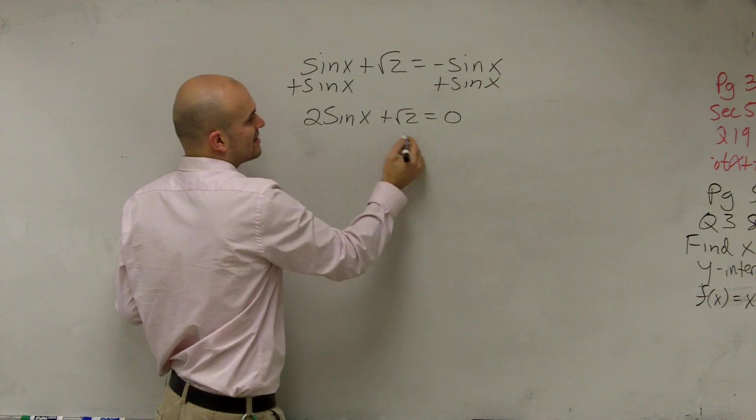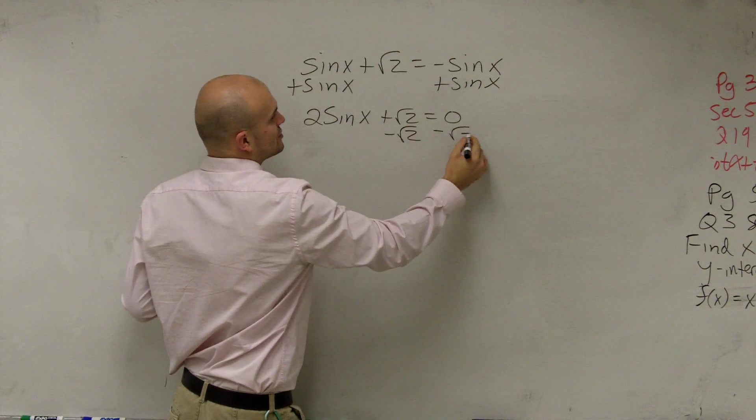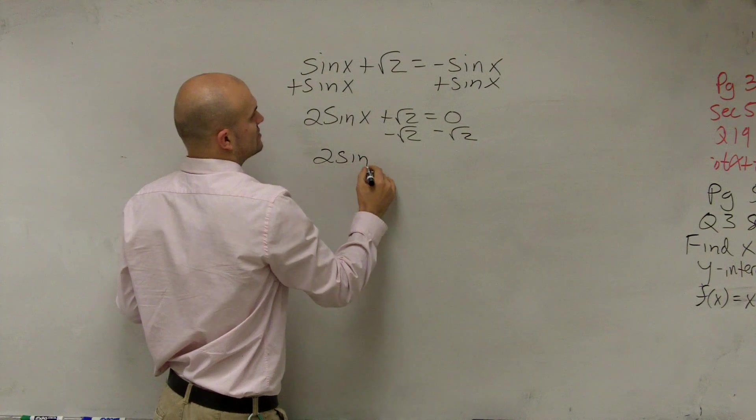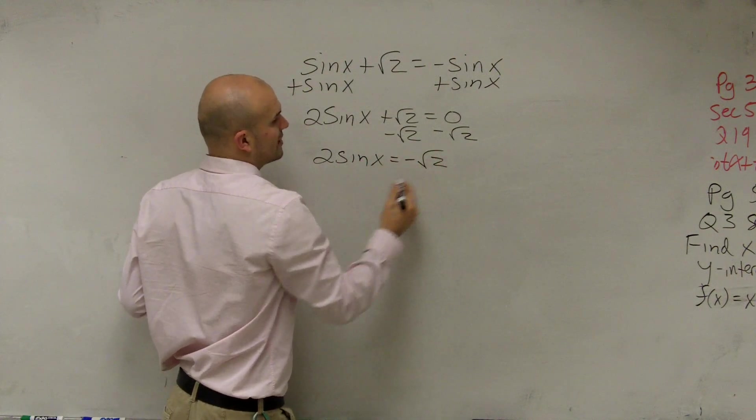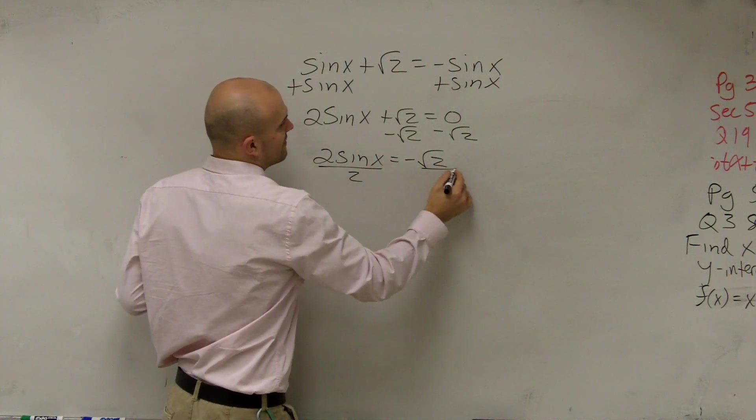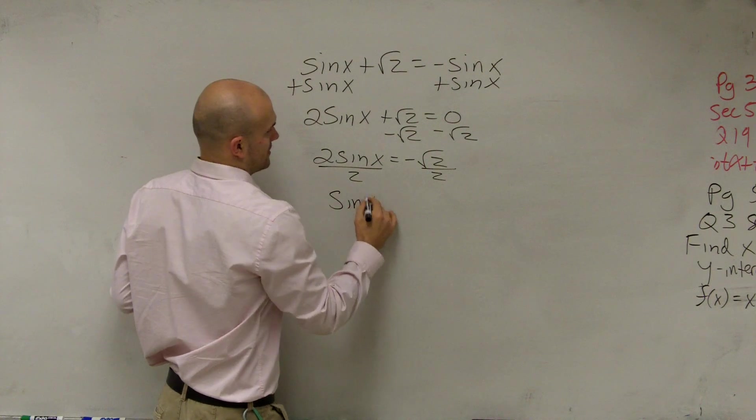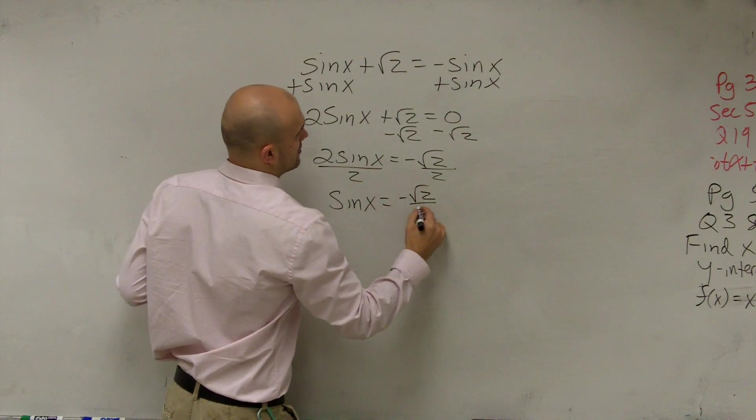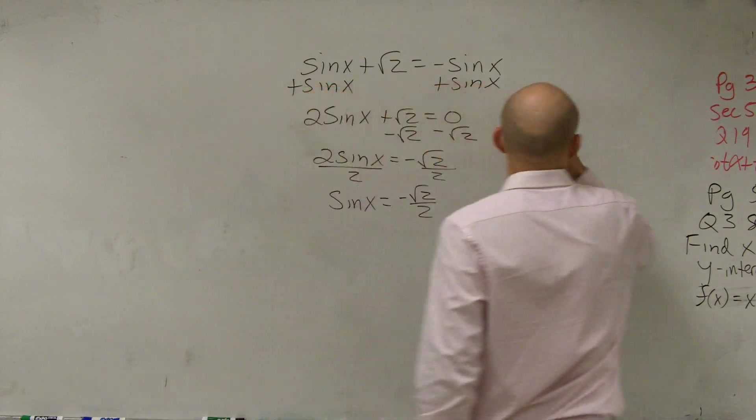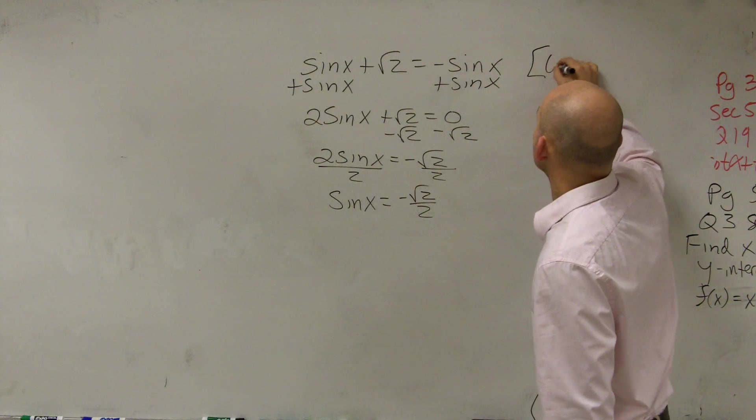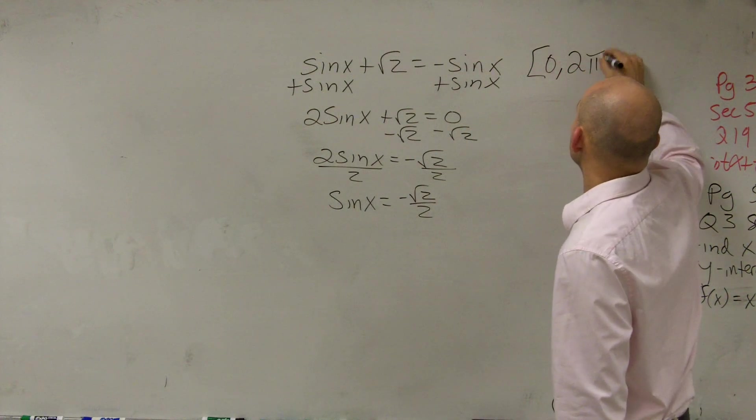Solving for my sine of x, I'm now going to subtract the square root of 2. And I get 2 sine of x equals negative square root of 2. Then divide by 2. And I forgot, we're only going to find our solutions, our answers, on the interval of 0 and 2 pi.